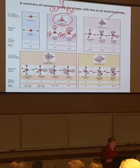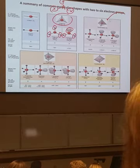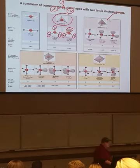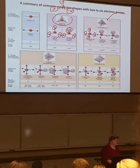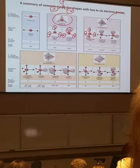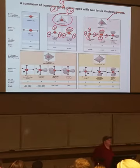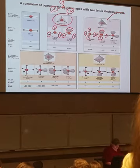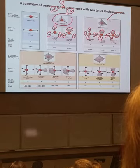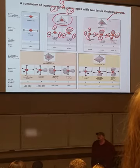Our next general category is the tetrahedral, and there are several different types. The recurring thing here is that there are four areas of electron repulsion. If they are all atoms, we call it a tetrahedral. The next variation also has four areas of electron repulsion, except one of them is a lone pair of electrons. The key to determining shapes is figuring out how many areas of repulsion you have — that is absolutely critical.